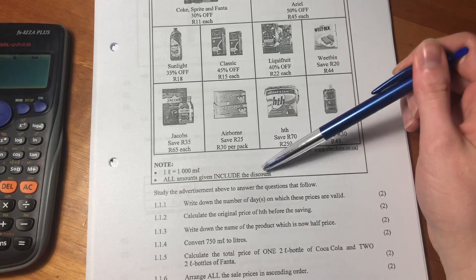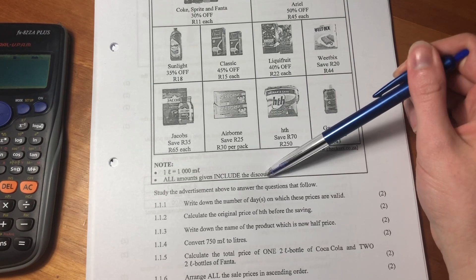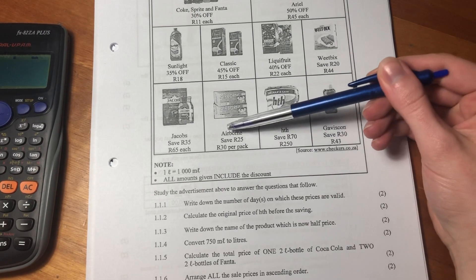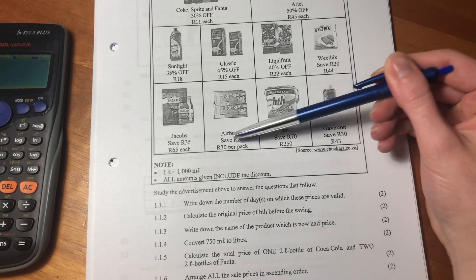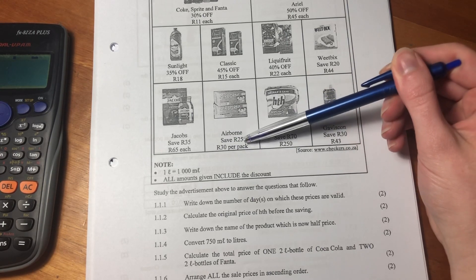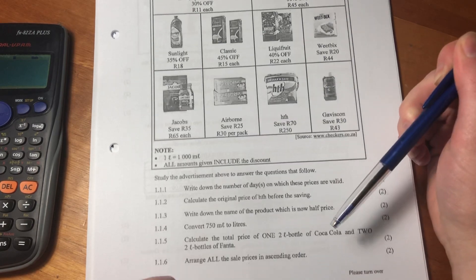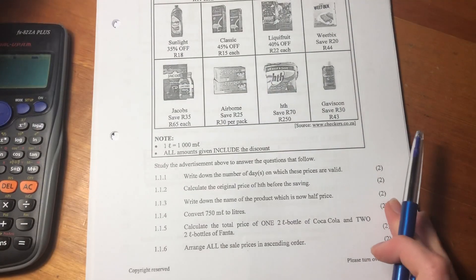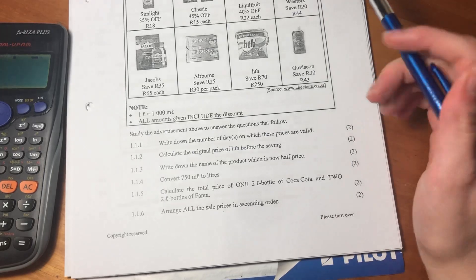Importantly, one liter equals a thousand milliliters. We're probably going to have to do some conversions. And then all amounts given include the discount. So if there's Airborne, it says you save 25 rand. The 30 rand is after the 25 rand has been taken off.